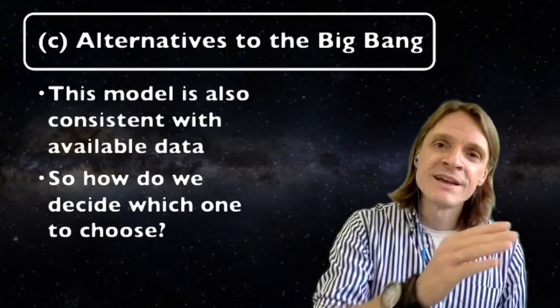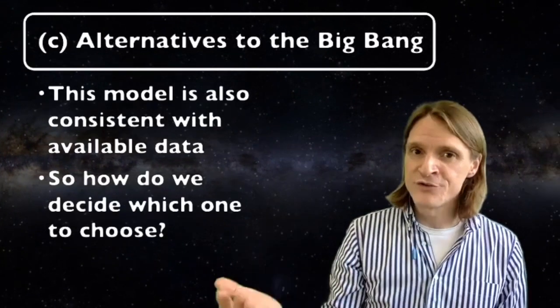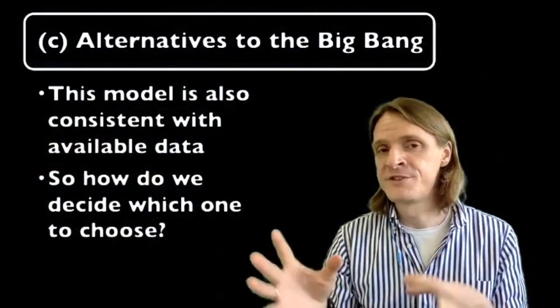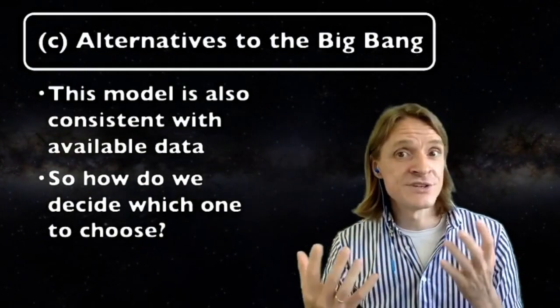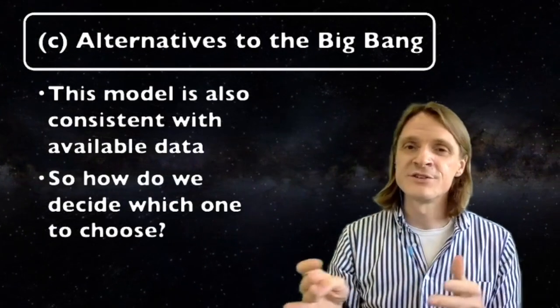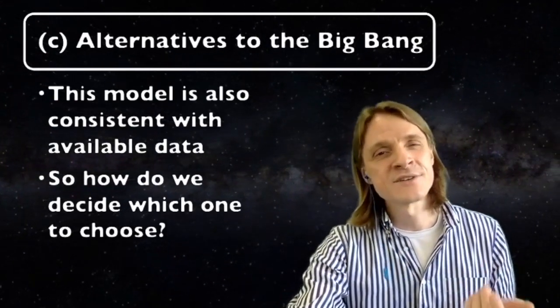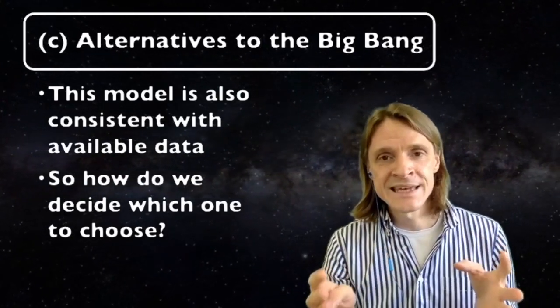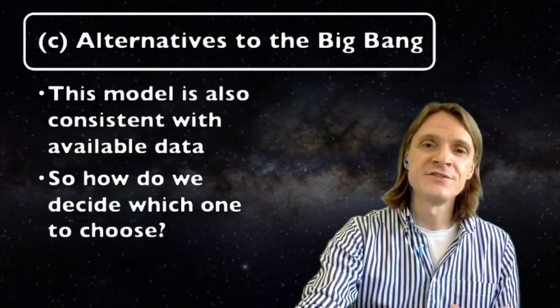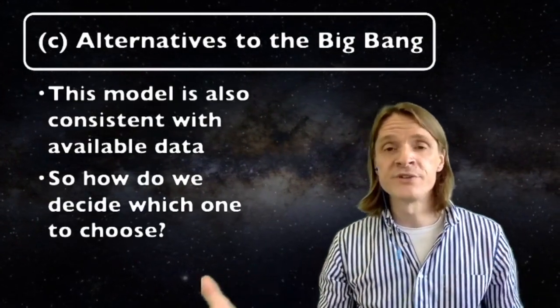What's interesting, both this model and the Big Bang theory, as well as a couple of other alternative theories of the origins of the universe, are equally consistent with the available data with all known observations. So how do we decide which one to choose? Sometimes in science, we choose the one theory over the others because it is slightly more consistent with the data that we currently have. But sometimes data is not enough to make a choice. And then we choose for some other reasons. For example, how comfortable scientists feel with a particular theory, or even simply because one theory gained more popularity than the other.